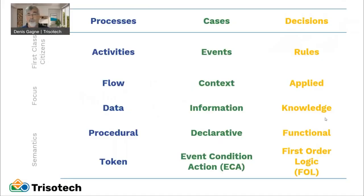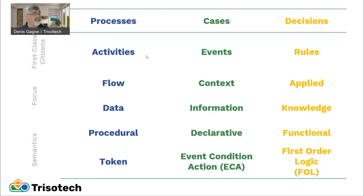Today I wanted to go over the three standards in terms of their main differentiations. BPMN is all about processes — the first class citizens are the activities, and we're focusing on the flow of activity and the data that is consumed by that flow of activity.